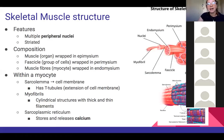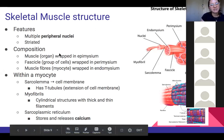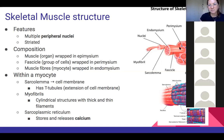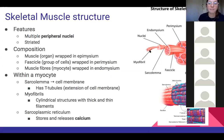Muscles have important histological features that come up in exams: many peripheral nuclei and striations. In terms of connective tissue composition, the whole muscle is wrapped in epimysium, a group of muscle cells (a fascicle) is wrapped in perimysium, and individual myocytes are wrapped in endomysium. Within the myocytes, the sarcolemma is the cell membrane. It has T-tubules extending inward, the myofibrils contain actin and myosin, and the sarcoplasmic reticulum is super important because it stores calcium.